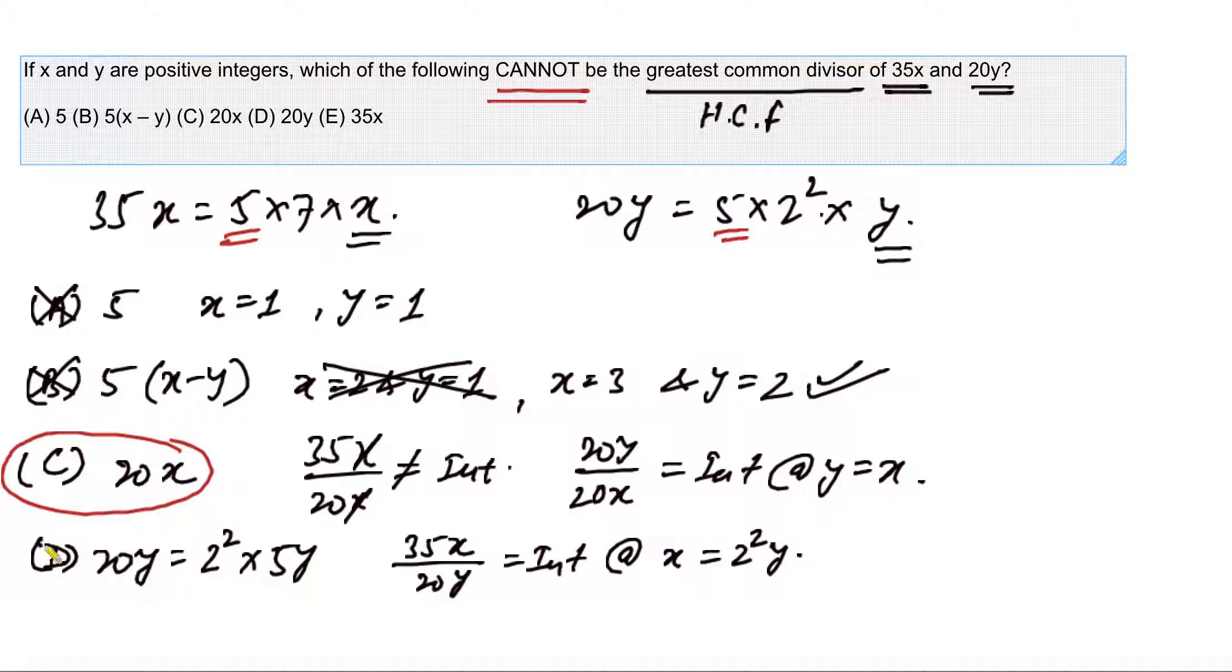Similarly, if we look at option E which is 35x, then we can understand it's 5 times 7x; it's anyway a factor of 35x. But the question is can it divide 20y as well? The answer is yes, of course it can, if the value of y is assumed to be 7x. That's how not only do we find the right option for ourselves, but we very confidently eliminate the other four options as well in order to be sure that our answer is perfectly fine and correct.